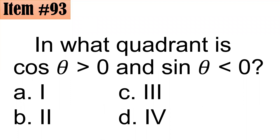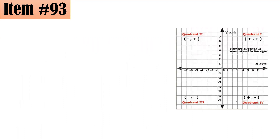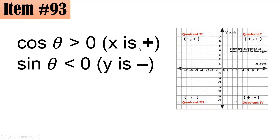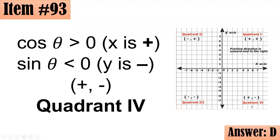Item 93: In what quadrant is cosine θ > 0 and sine θ < 0? Cosine θ > 0 means X is positive, and sine θ < 0 means Y is negative. Positive X and negative Y corresponds to quadrant 4, letter D.